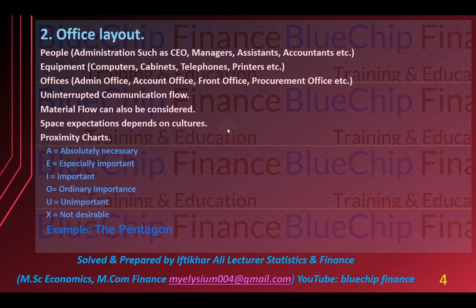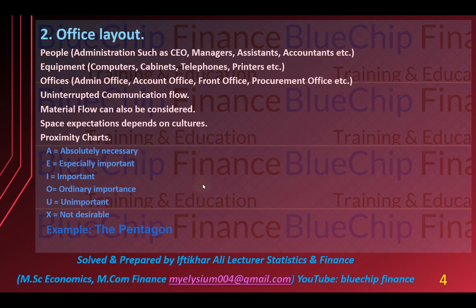Office layout ke andar office banane ka proximity chart hota hai. Is mein: A = absolutely necessary, E = especially important, I = important, O = ordinary importance, U = unimportant, X = not desirable — yani ke un ki jo nearness hai, un ki jo qurbat hai, un offices ke andar wo mukhtalif alphabets se denote kiya jata hai. For example, jo CEO hai us ke nazdeek managers ke offices hone chahiye. Yeh proximity chart pehle banaya jata hai aur phir us ke mutabiq layout follow kiya jata hai. Is ki sab se badi example hai The Pentagon.